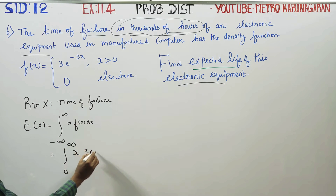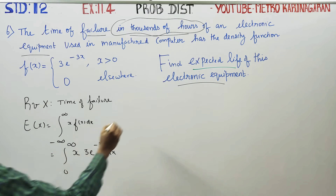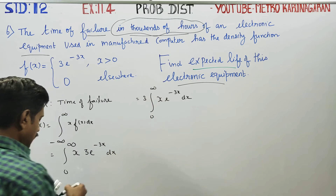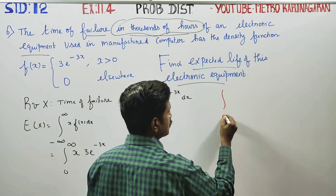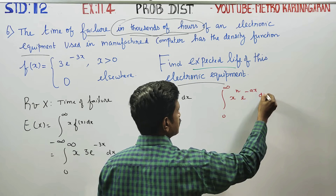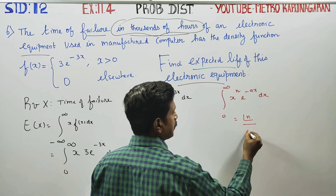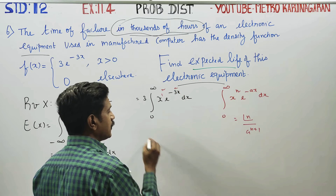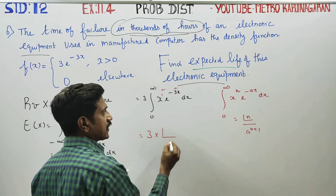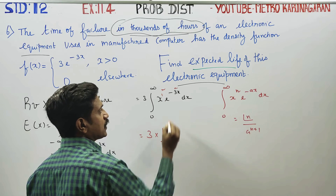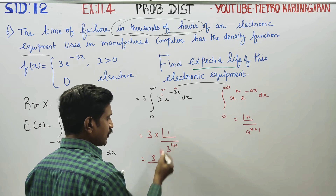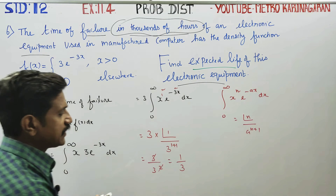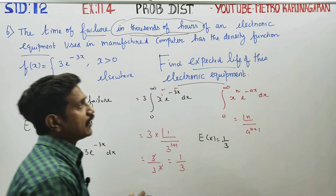Here, x·f(x) is 3 into e power minus 3x dx. So we compute the integral of x times 3·e^(-3x) from 0 to infinity, giving us 1 into e power minus x.